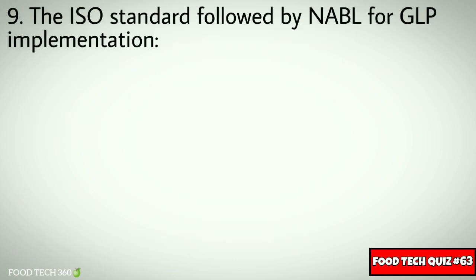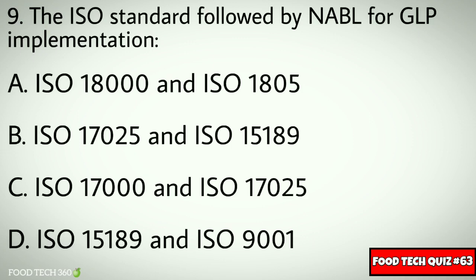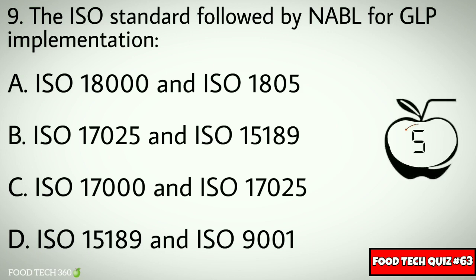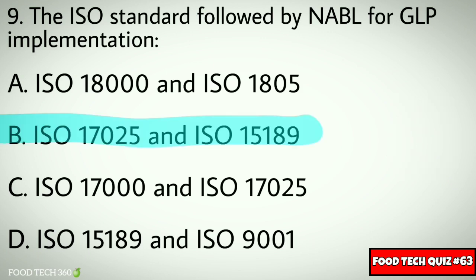Question No. 9. The ISO standard followed by NABL for GLP implementation: Options: A. ISO 18004 and ISO 1805, B. ISO 17025 and ISO 15189, C. ISO 17000 and ISO 17025, D. ISO 15189 and ISO 9001. Correct answer: B. ISO 17025 and ISO 15189.